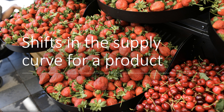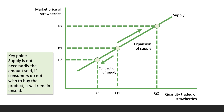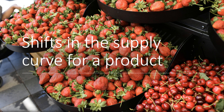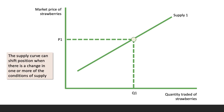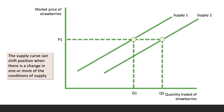Let's think about shifts in the supply curve for a particular product. We have our supply curve drawn with a positive price-supply relationship, but the supply curve can shift position when there is a change in one or more of what we call the conditions of supply. Starting at price P1, producers are incentivized to produce Q1 of strawberries. If the supply curve shifts outward from S1 to S2, that means at a given price level the producer can supply more to the market — their costs must have gone down. We call that an increase or outward shift of supply.